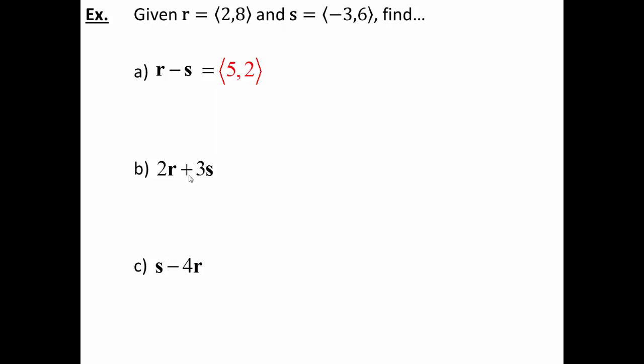For the second and third, we can do it very similarly. If you haven't tried it already, go ahead and pause the video, try them on your own and then hit play. So we've got some scalar multiplication snuck in there as well as the vector addition. So first thing I've got to do is take r and double it. So I'll get (4, 16). Then I can take s and triple it. (-9, 18). And now I'm ready to add it together. (-5, 34).